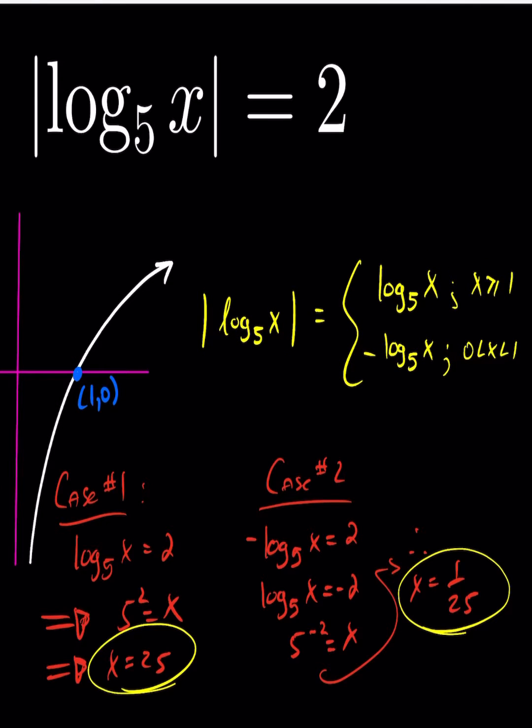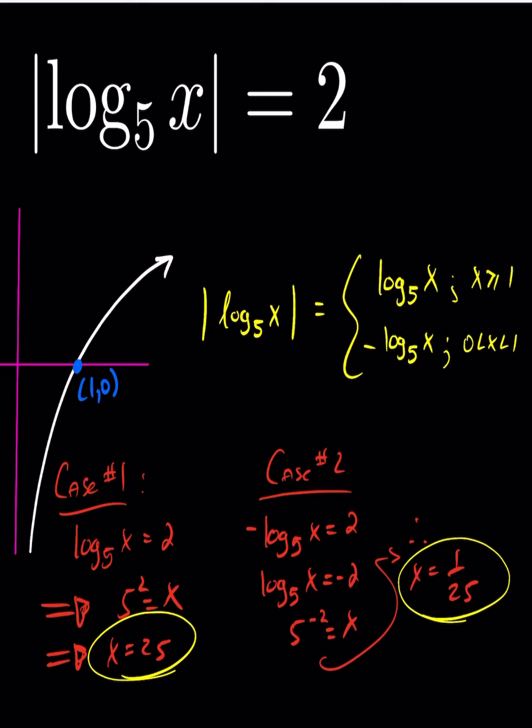So you'll see here this generates two cases. Case 1 is log base 5 of x equals 2, and the other case is negative log base 5 of x equals 2.